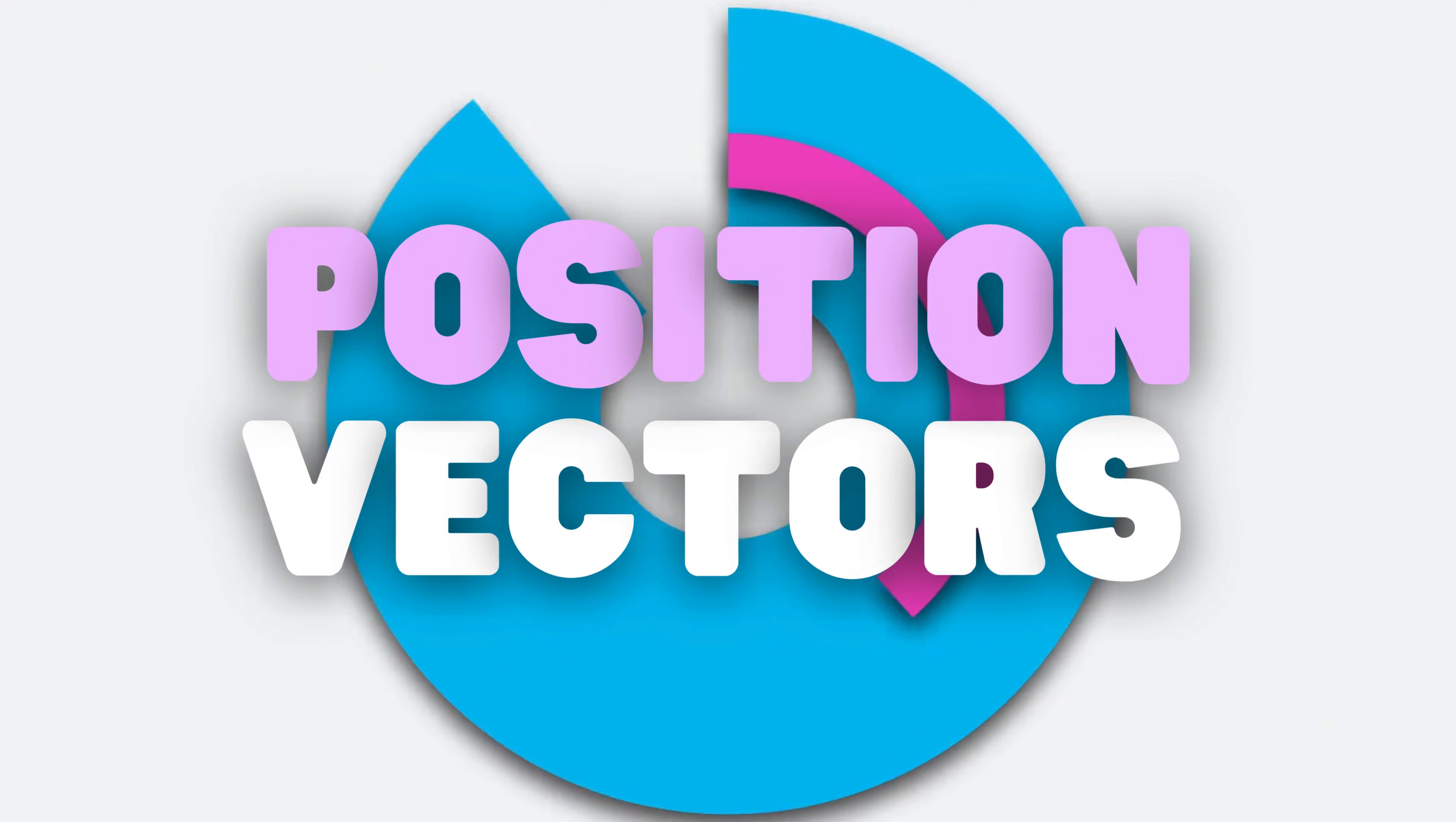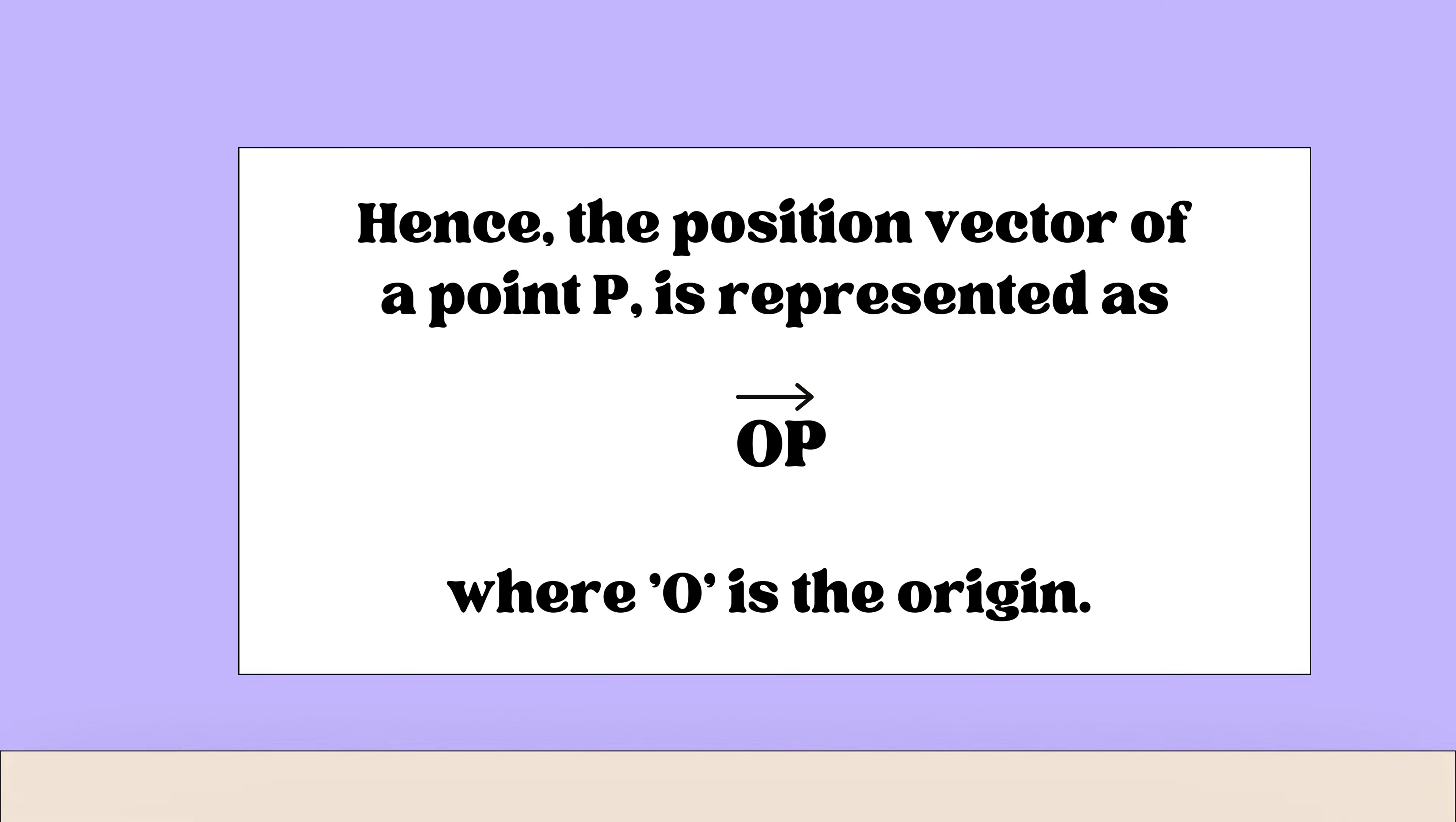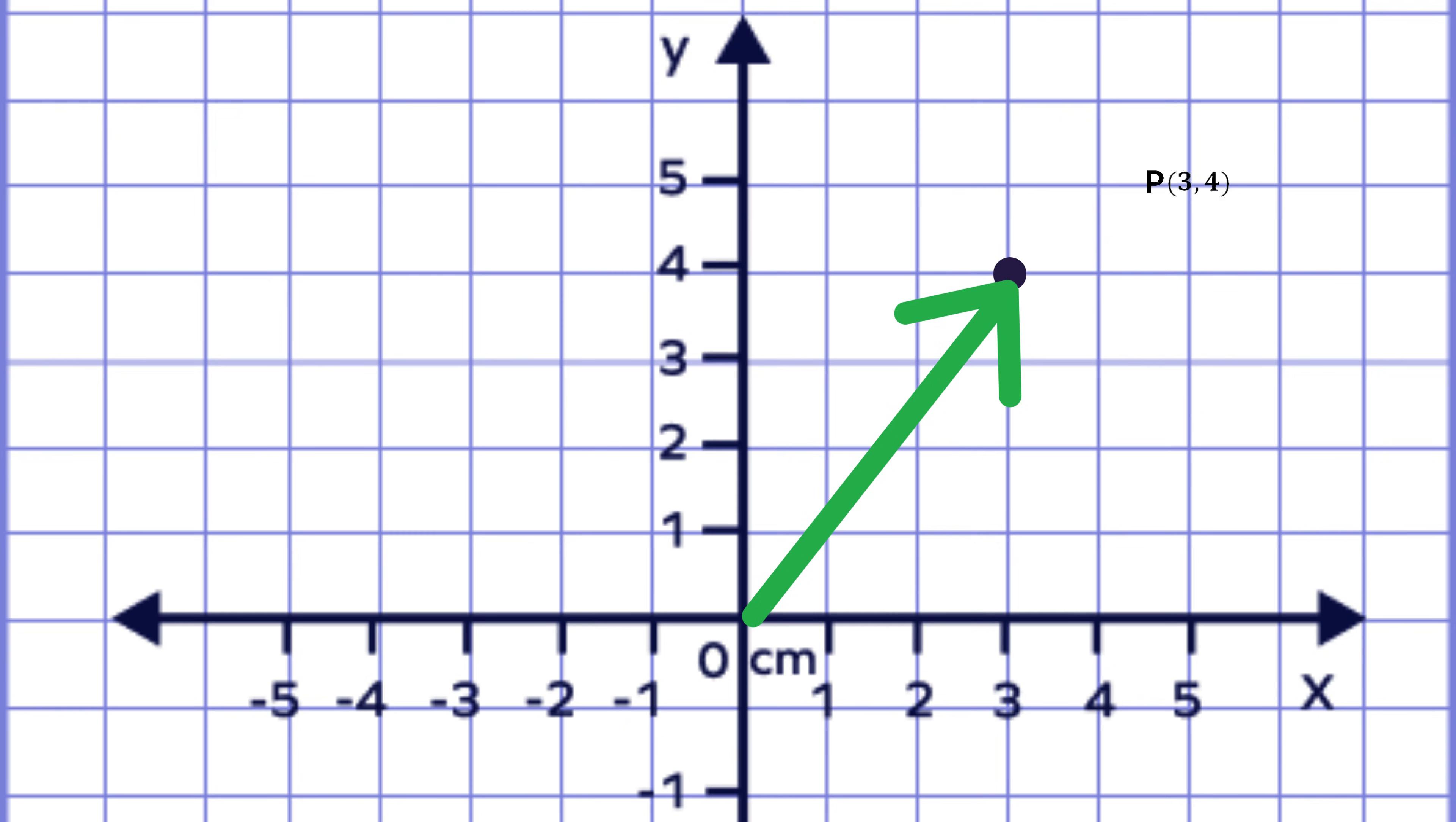Let's talk about position vectors. A position vector is a vector that represents the position of a point relative to the origin. Hence, the position vector of a point P is represented as OP, where O is the origin. For example, suppose the point P is located at (3, 4). Its position vector is OP equal (3, 4).